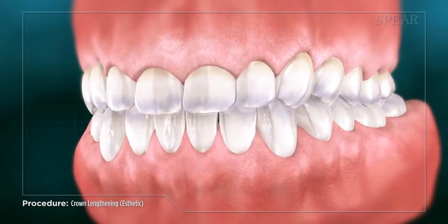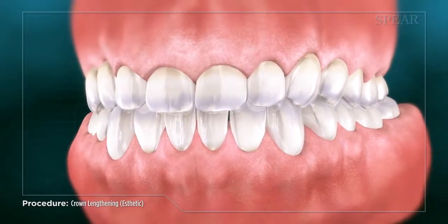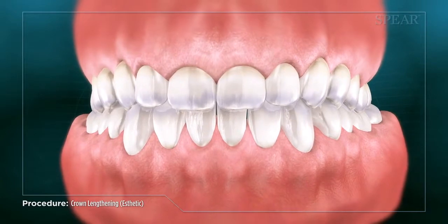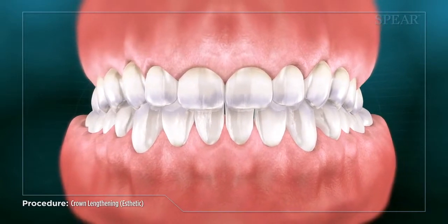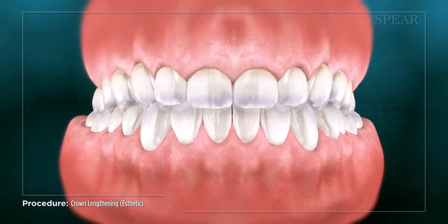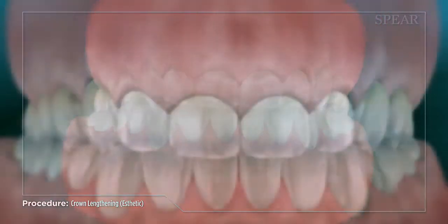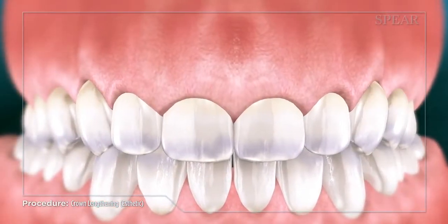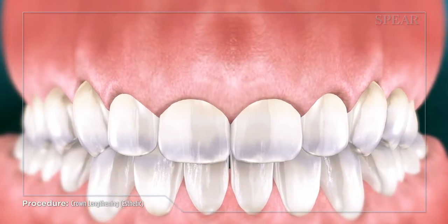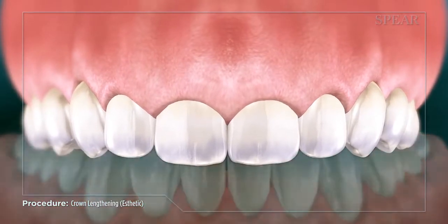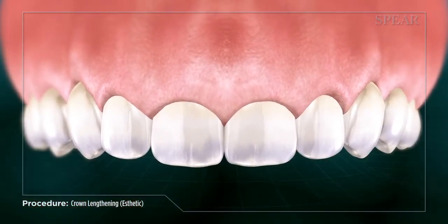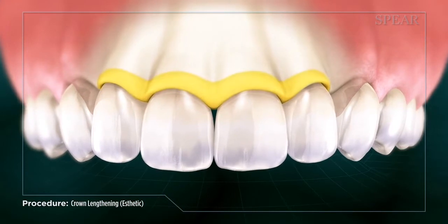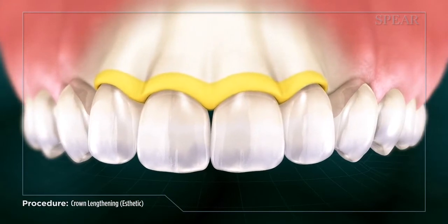To improve appearance, sometimes teeth require exposing more tooth material than is available below the gum line. In these situations, your doctor may recommend a procedure called crown lengthening, in which the surrounding tissue is altered to expose additional healthy tooth material.